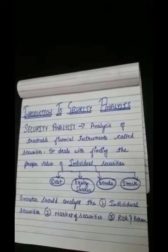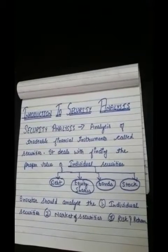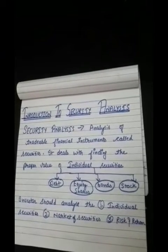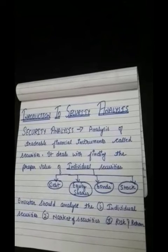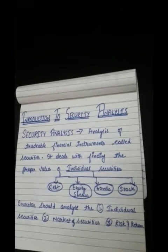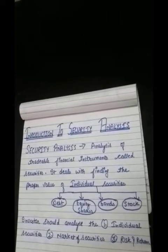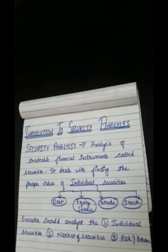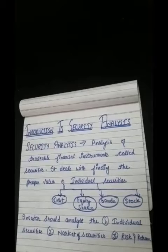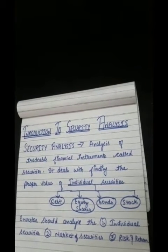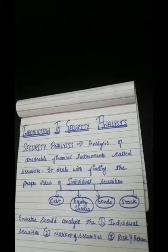An investor, while investing in securities, should keep in mind two important things. First is what securities should be held, and second is how much money should be allocated to each. In the stock market, different kinds of securities are available. For example, if the investor has rupees 1 lakh, how much would he like to spend on equity shares or on debentures?